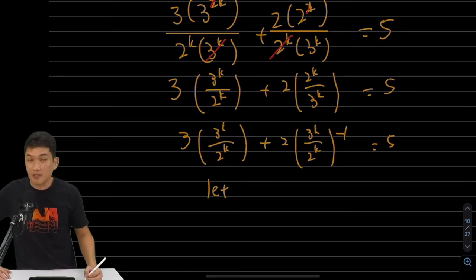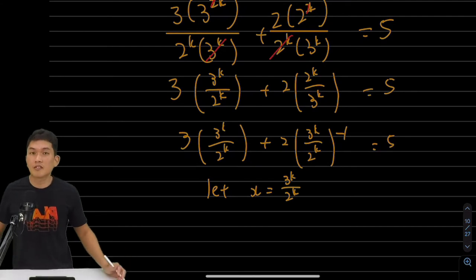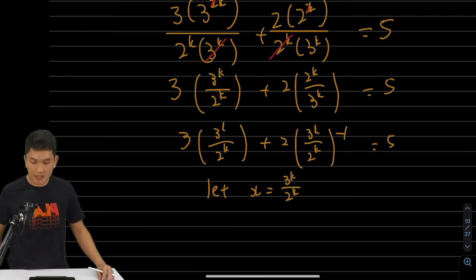Then I'm going to let, this is the important pattern, x equals to 3 to the k over 2 to the k. That's it. This is how we solve this kind of question.